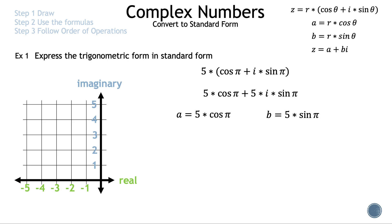First, let's find 5·cos π. Cosine of π is −1, and 5 × (−1) = −5, so a = −5. Next, let's find 5·sin π. Sine of π is 0, and 5 × 0 = 0, so b = 0.